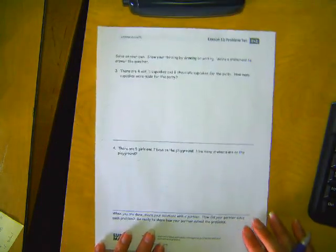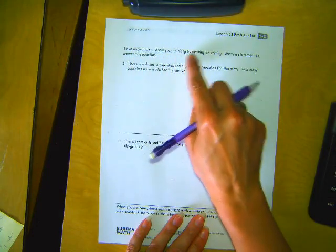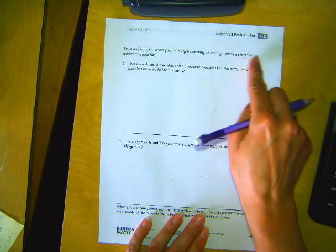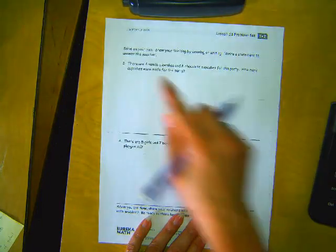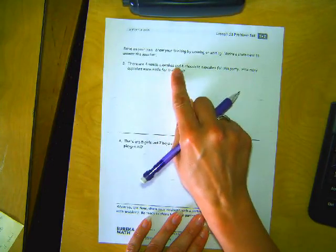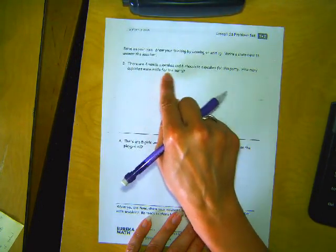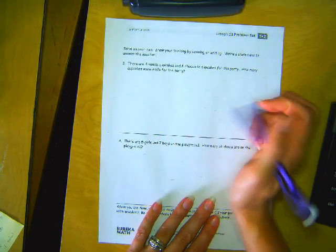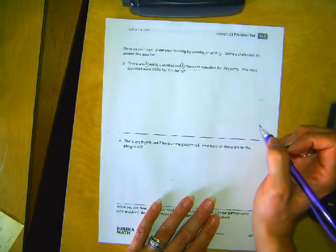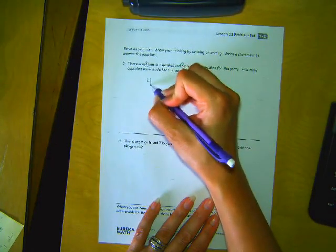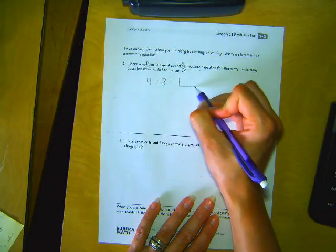All right. Let's turn it over to the other side and read it. Solve on your own. Show your thinking by drawing or writing. Write a statement to answer the question. That means you're going to have to write out a sentence with the answer in it. Okay. Number three. There are four vanilla cupcakes and eight chocolate cupcakes for the party. How many cupcakes were made for the party? Okay. Important information. I see a four and an eight. Four are vanilla, eight are chocolate. So what if I just wrote this out? Four plus eight equals. I'm going to put a square here because I don't know the answer yet.